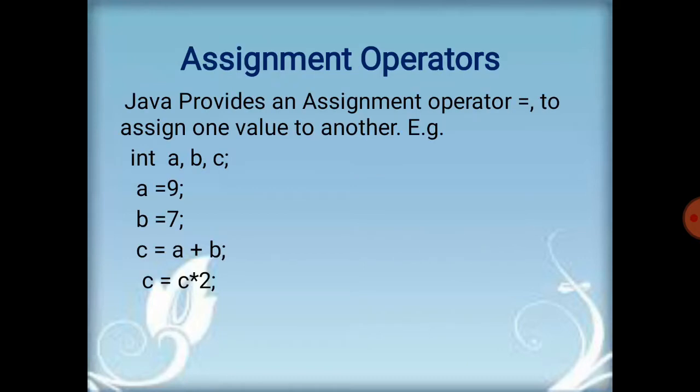We start with the assignment operator. Java provides an assignment operator — equal to — to assign one value to another. For example, we have taken three variables a, b, and c. The assignment operator is able to assign any value to the variable. For example, a is equal to 9, so we assign 9 to a. b is equal to 7, so we assign the value 7 inside the variable b. We can also assign in another way: c is equal to a plus b. Here, the value of a plus b is first added and then assigned inside c.